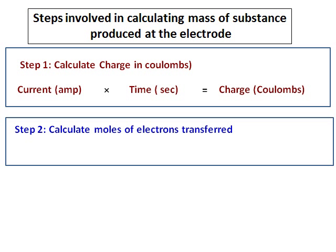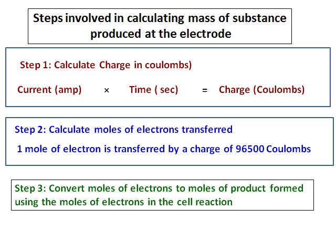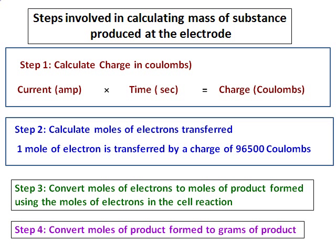Step 2 is to calculate the moles of electrons transferred. Remember: one mole of electrons is transferred by a charge of 96500 coulombs. Step 3 is to convert moles of electrons to moles of product formed using the stoichiometry of the cell reaction. Step 4: if grams of product are required, convert the moles of product into grams using the molar mass.